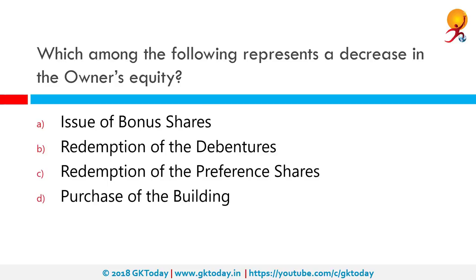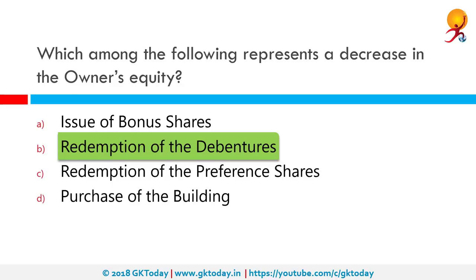Which among the following represents a decrease in the owner's equity? The correct answer is redemption of debenture. A debenture is a capital market instrument used to raise medium or long-term funds from the public. It is essentially a debt instrument that acknowledges a loan to the company. When debentures are redeemed at their face value, they are said to be redeemable at par, and they can be redeemable at premium or discount as well.